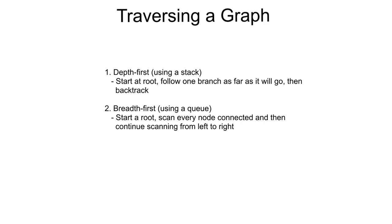With a breadth-first approach, we start at the root node and travel or scan to every node connected to it. Once we've done that, we continue scanning from left to right following a similar approach. Visually, it looks like we're searching the graph outwards from left to right and then down through the graph. For this, we use a queue data structure.